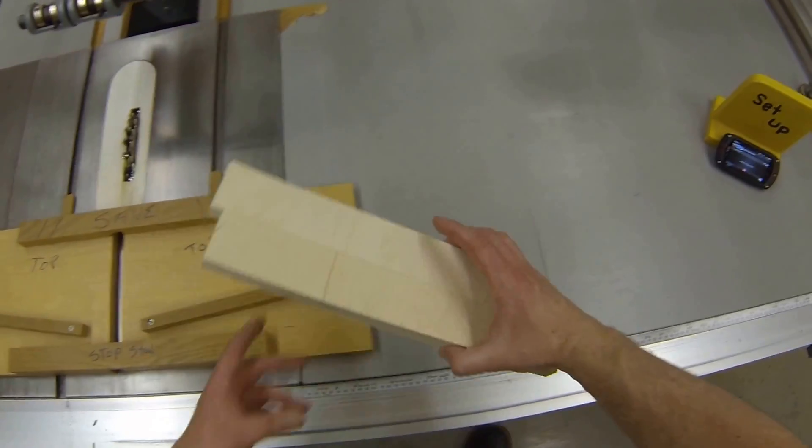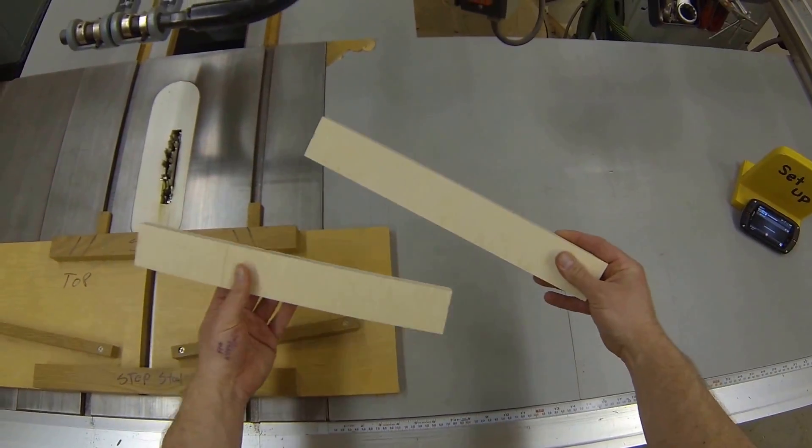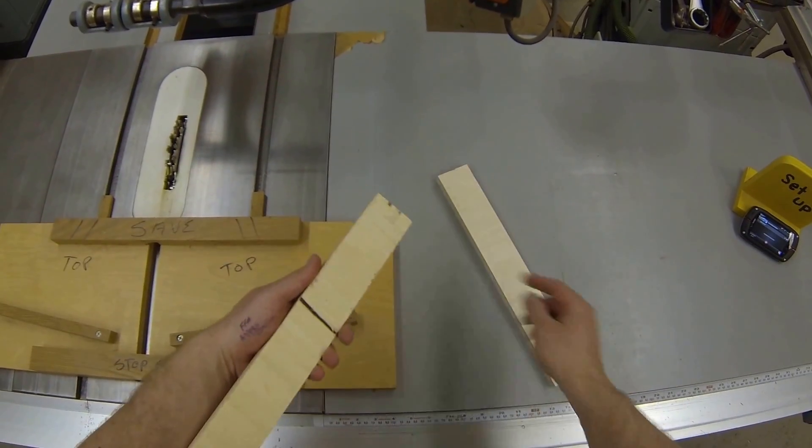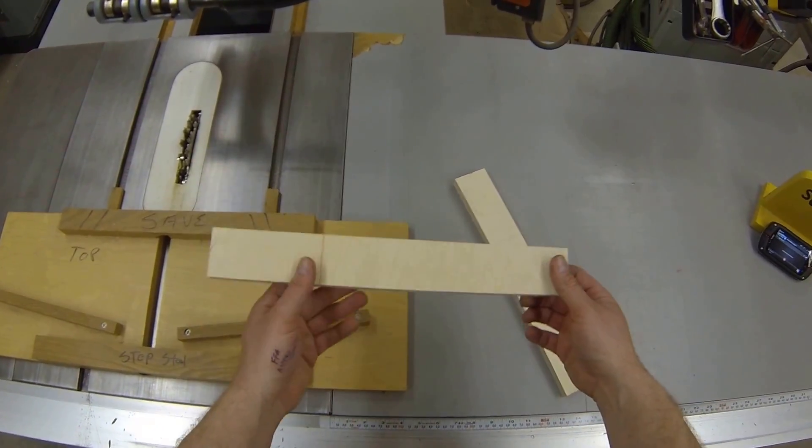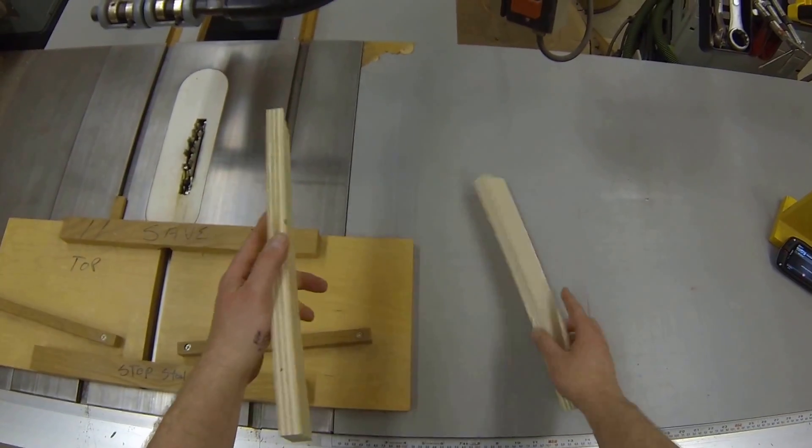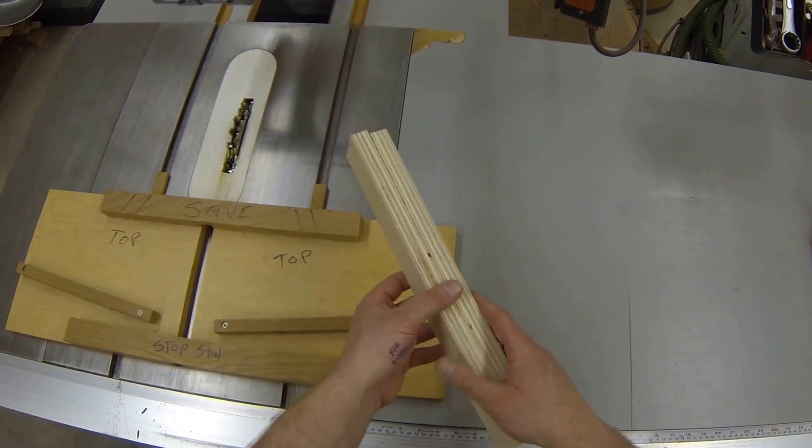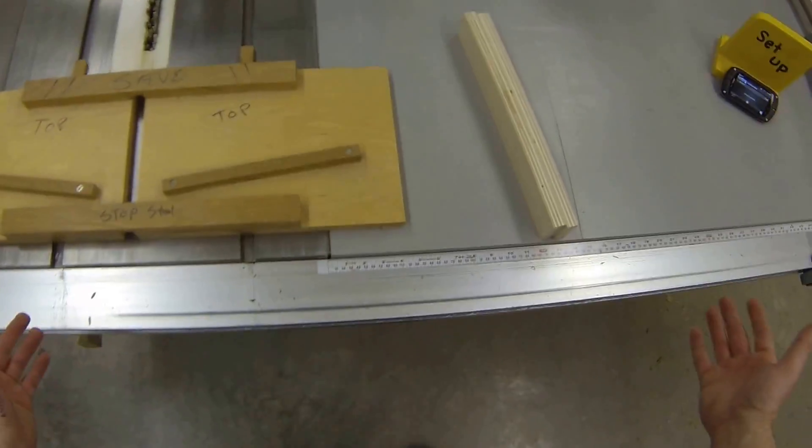Alright guys, what we're going to do today is take our stretchers and cut an eight degree dado on the inside. This will match up to our legs, and you'll see that in the next video.